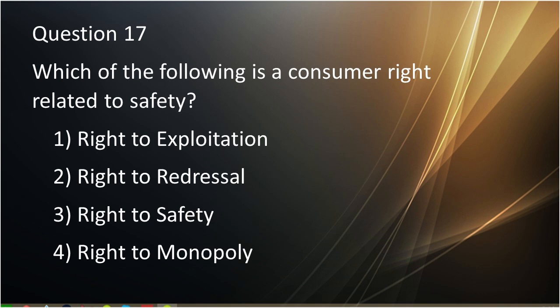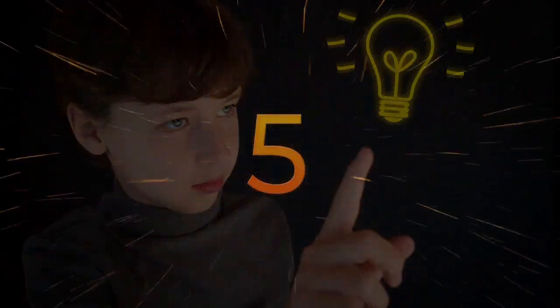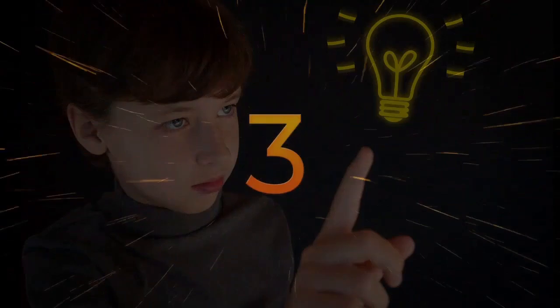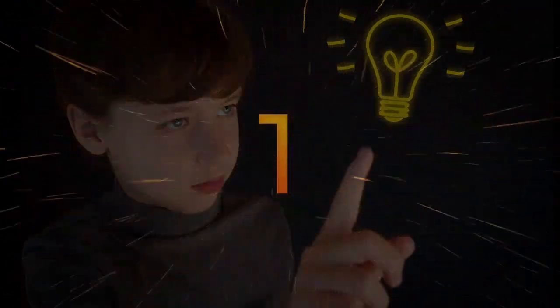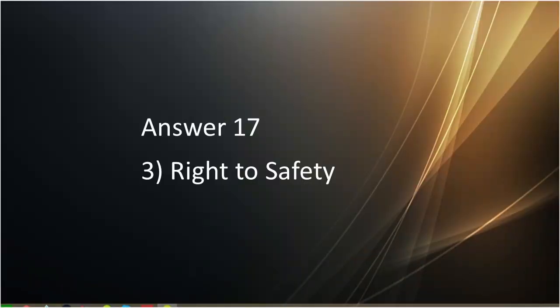Question number seventeen: Which of the following is a consumer right related to safety? First is right to delivery. Second is right to redressal. Third is right to safety. Fourth is right to monopoly. Answer to question number seventeen is right to safety.